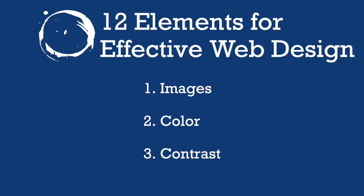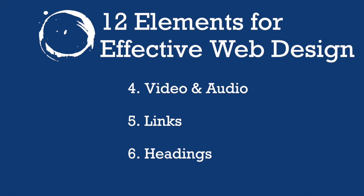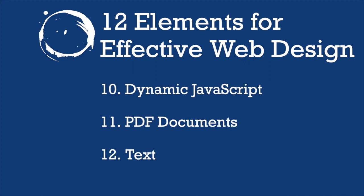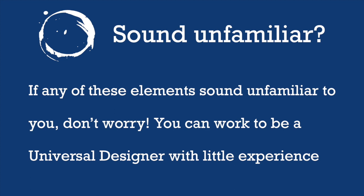Let's get started! There are 12 elements for effective web design. These elements are images, color, contrast, video and audio, links and headings, keyboard accessibility, tables and forms, dynamic JavaScript, PDF documents, and text. If any of these elements sound unfamiliar to you, don't worry — you can work to be a Universal Designer with little experience. You will not need a lot of technical experience to understand the elements we are about to discuss.